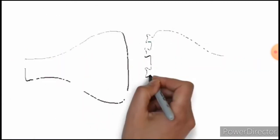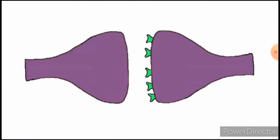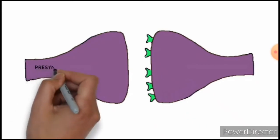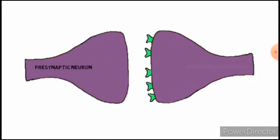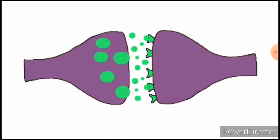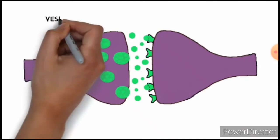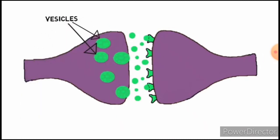The neuron where the signal is initiated is called the presynaptic neuron, while the neuron that receives the signal is called the postsynaptic neuron. In the presynaptic neuron, there are chemical signals called neurotransmitters that are packaged into small sacs called vesicles. Each vesicle can contain thousands of neurotransmitter molecules.